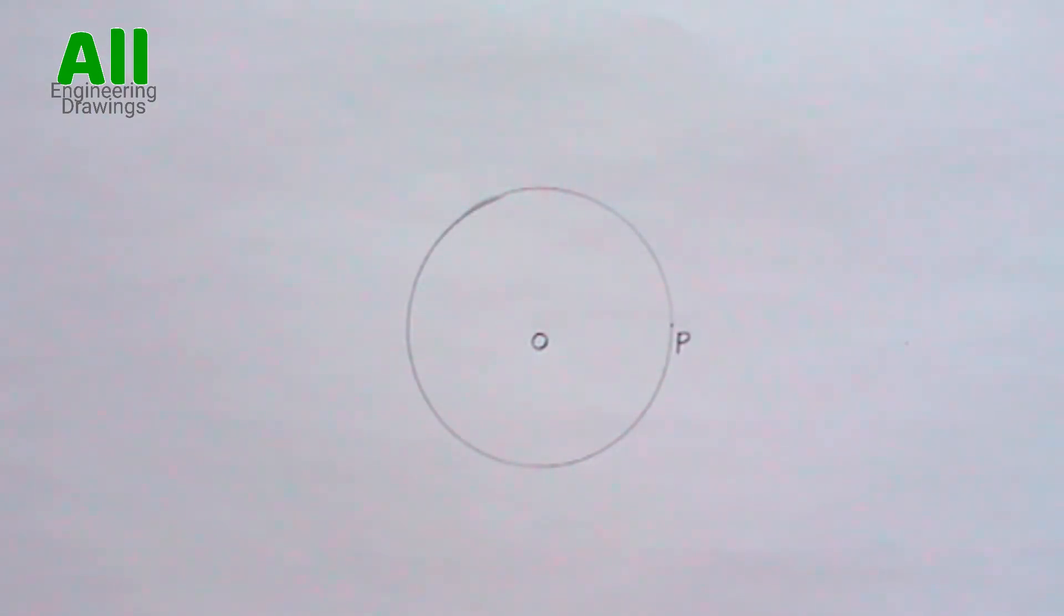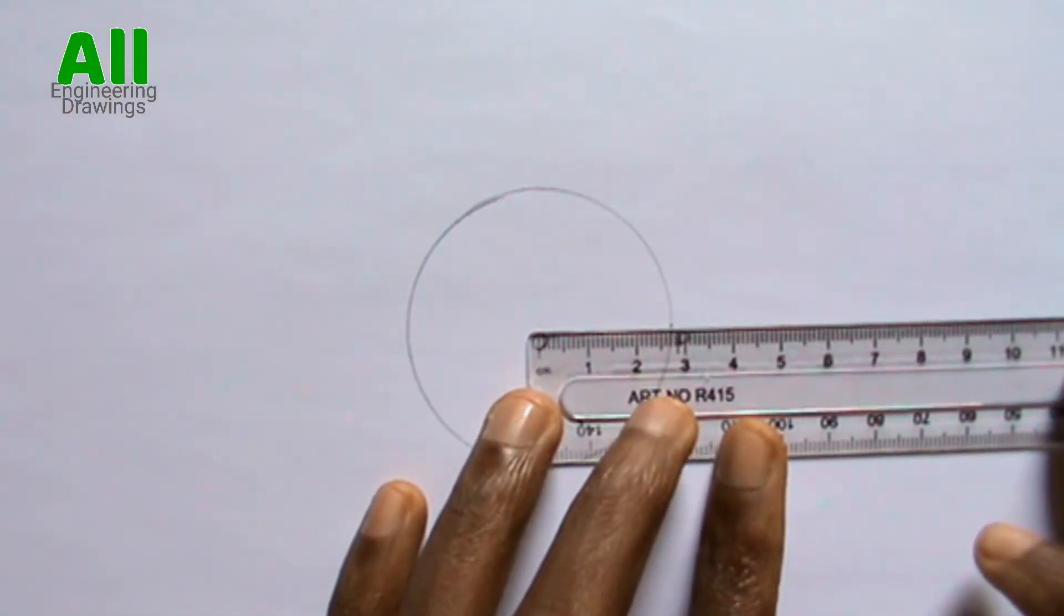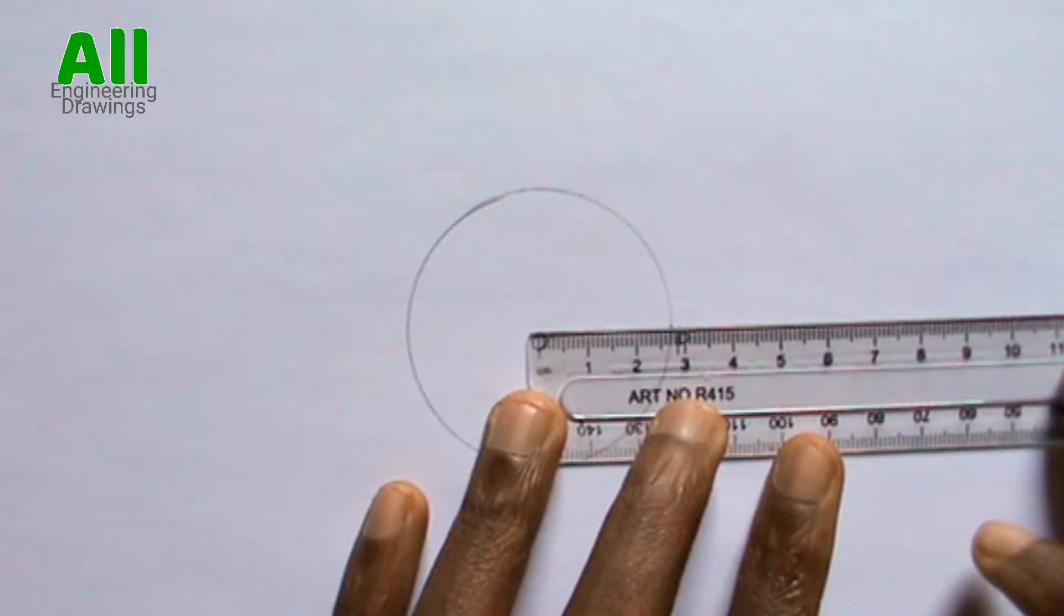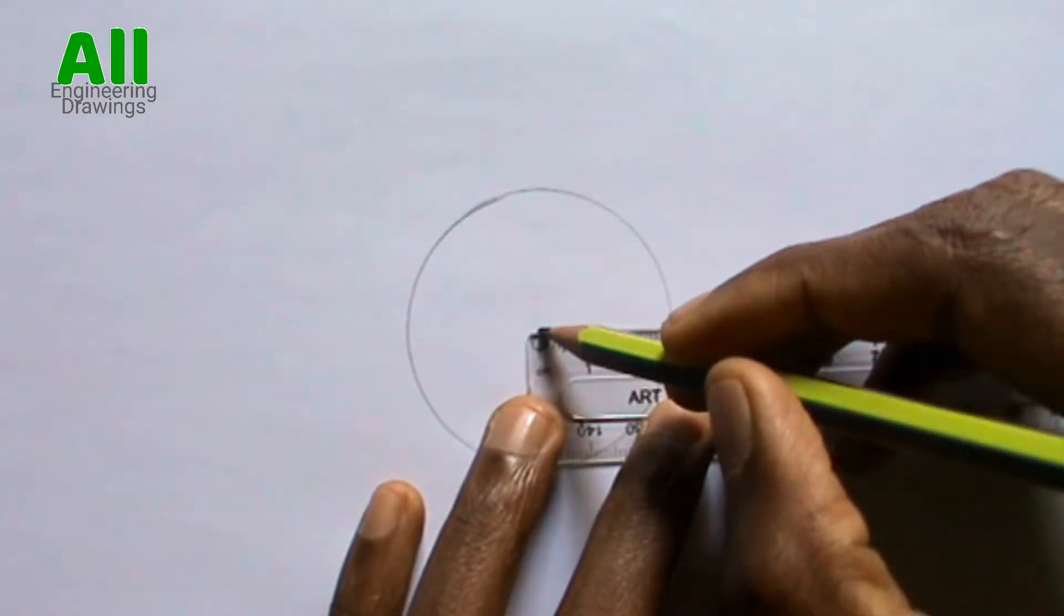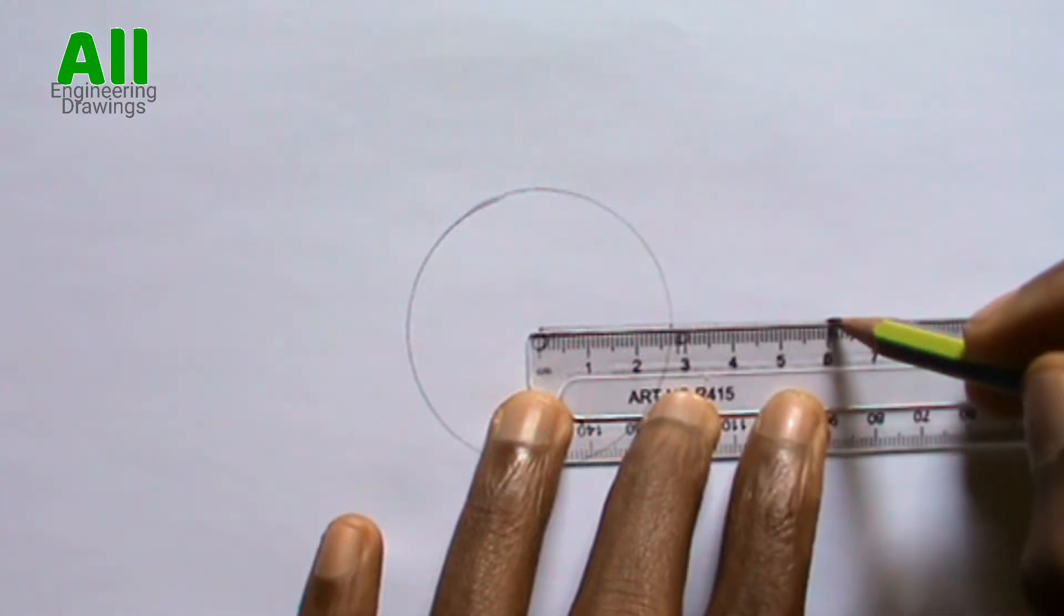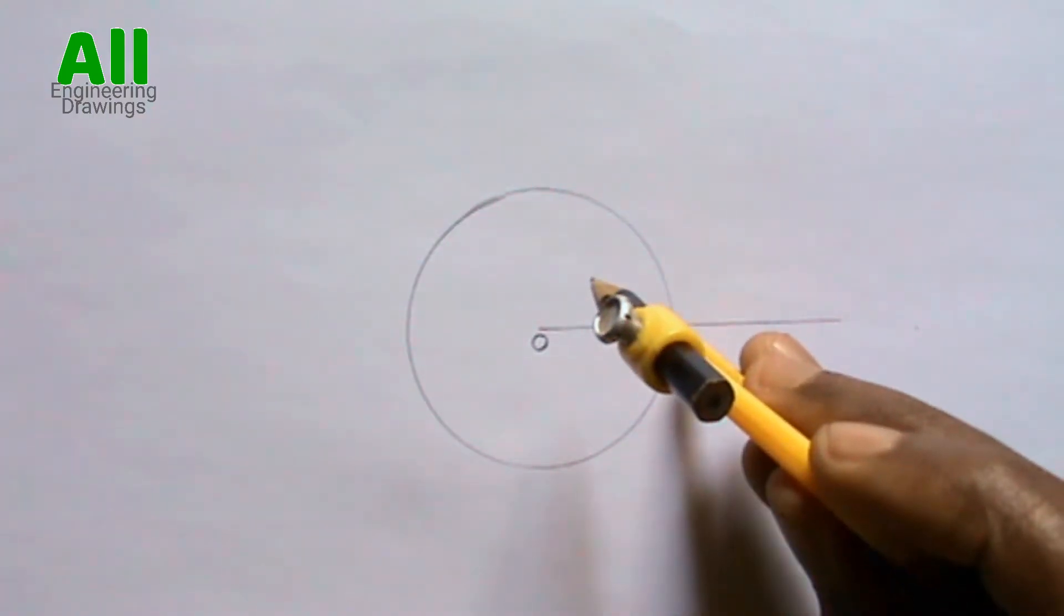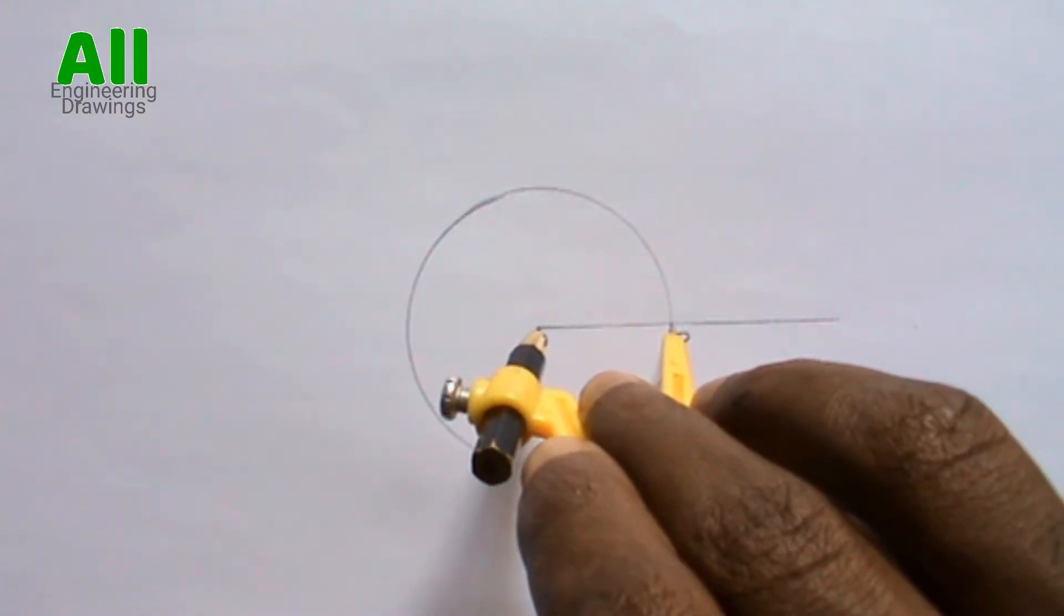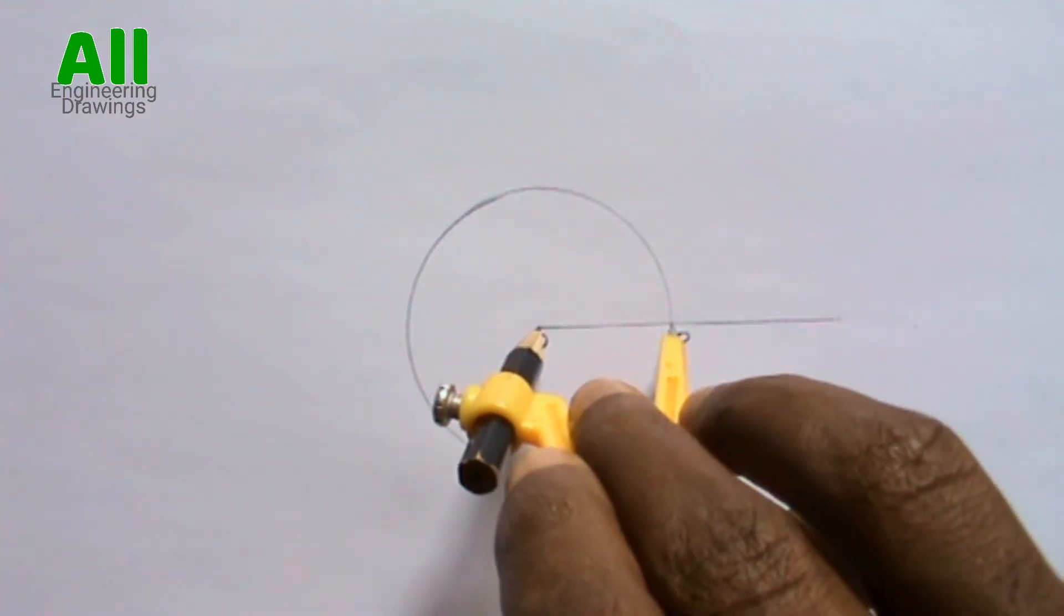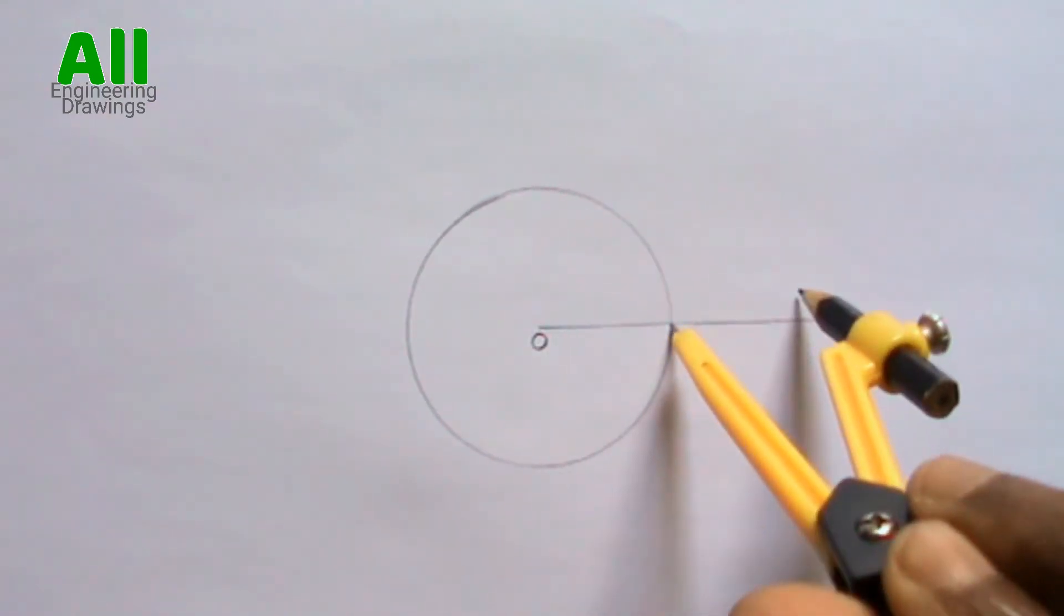Now extend a line passing through OP. Now place your compass on point P. Then extend your compass in such a way that your pencil tool is on point O. Then cut an arc on the extended line.